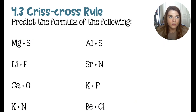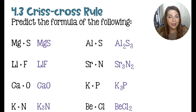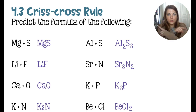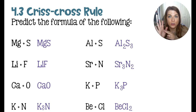Using the crisscross rule, predict the formula for the following elements bonding to each other. Using the periodic table, you should be able to predict charges based on group number. Magnesium is in group two, so it has two valence electrons to lose and a plus two charge. Sulfur is in group 16 with six valence electrons, looking to gain two, giving a minus two charge. When we crisscross those, we get MgS — because in ionic compounds we reduce subscripts when possible, and magnesium gives its two electrons to the same sulfur atom.